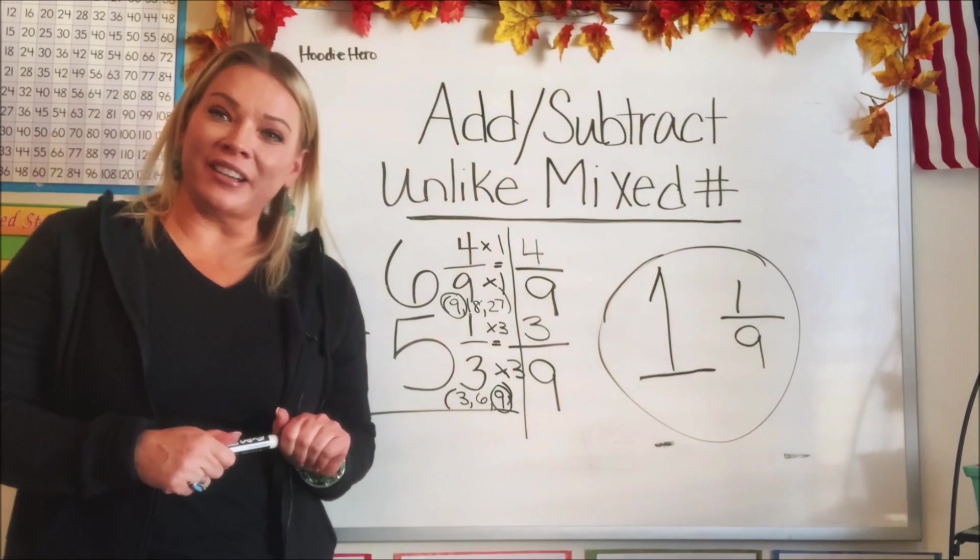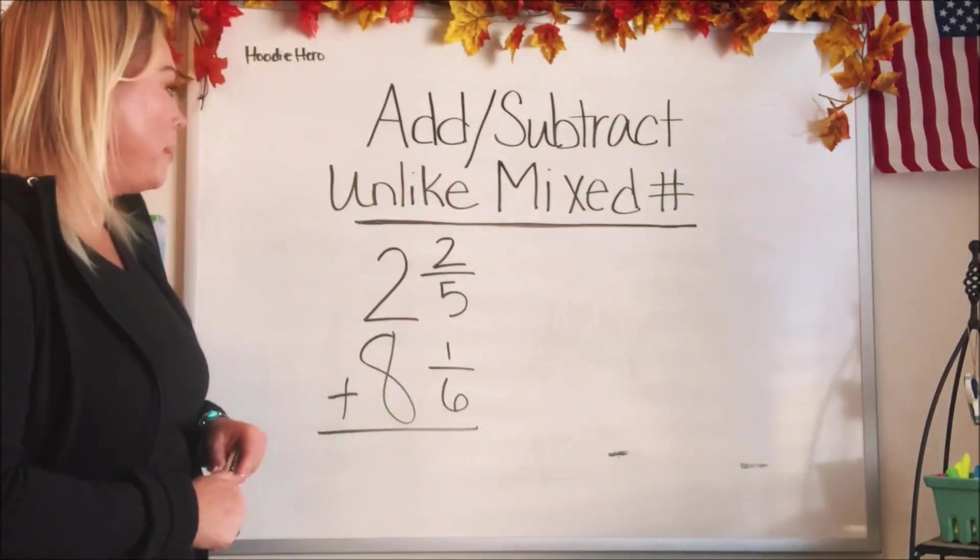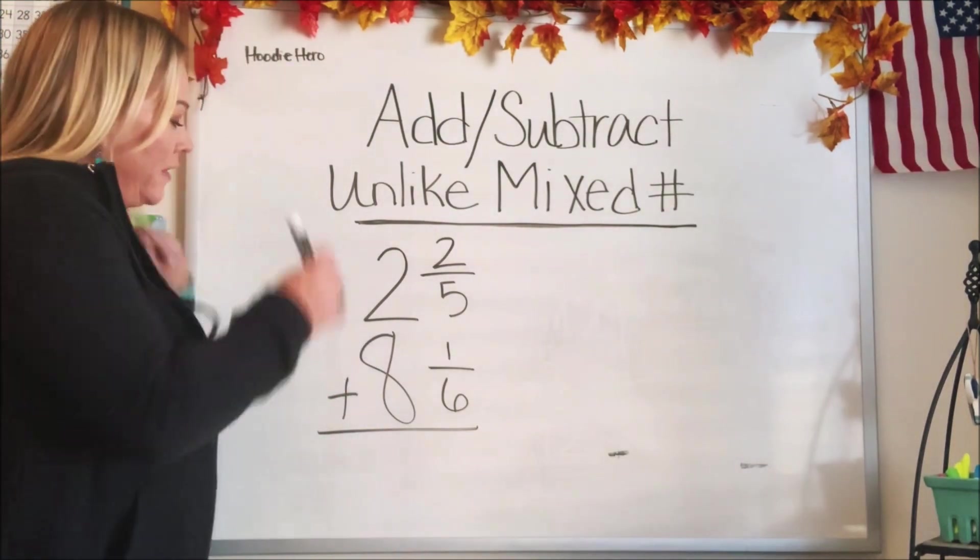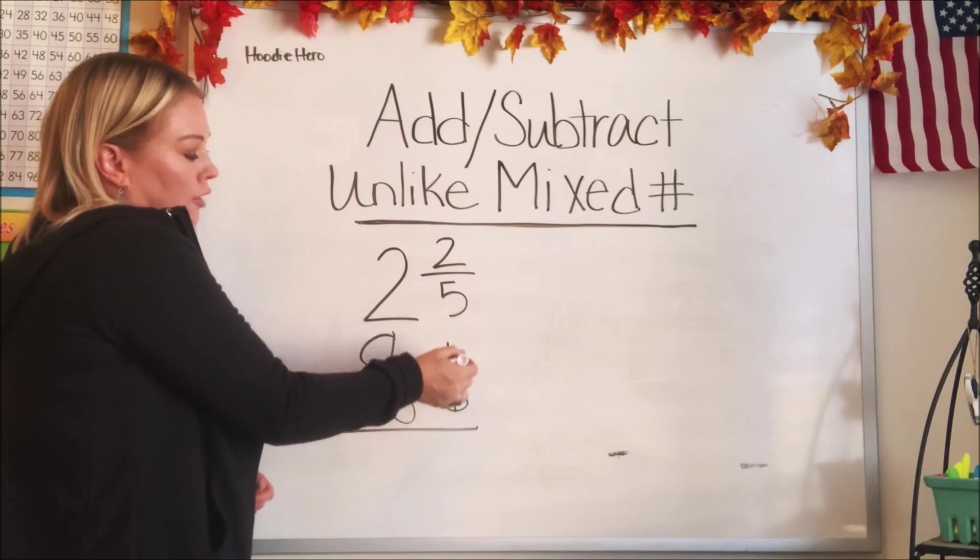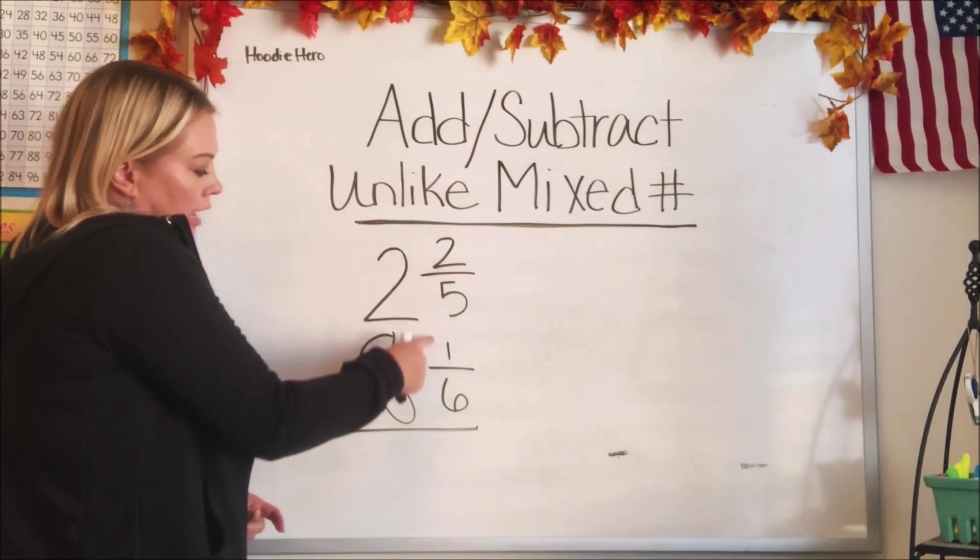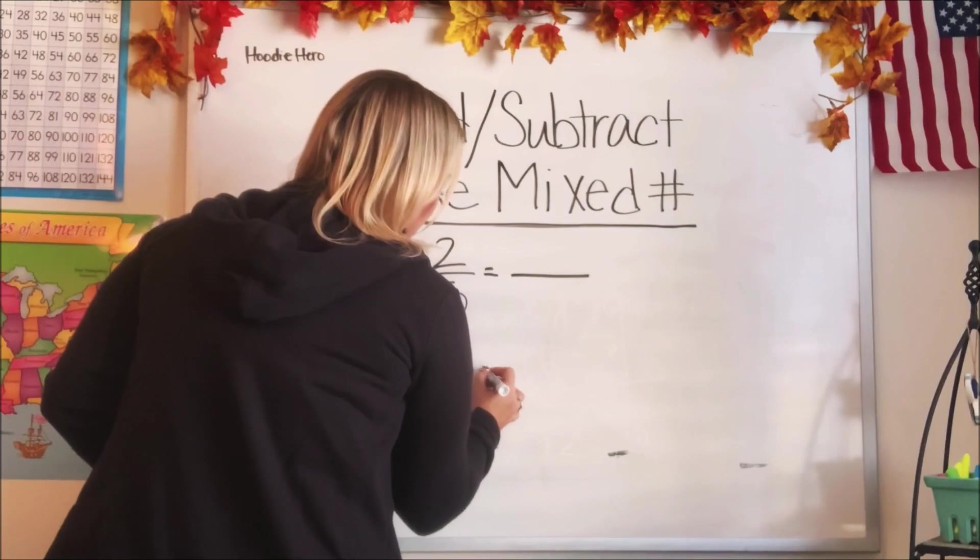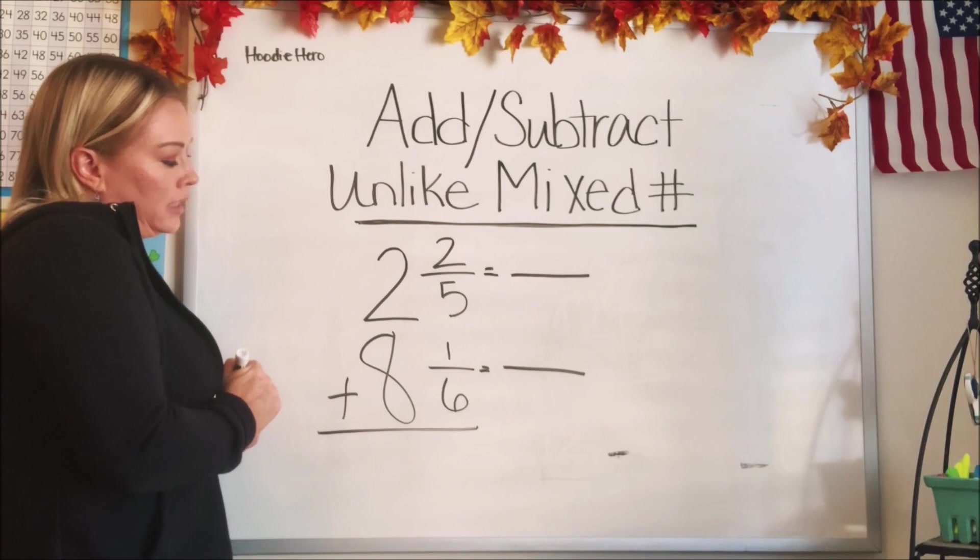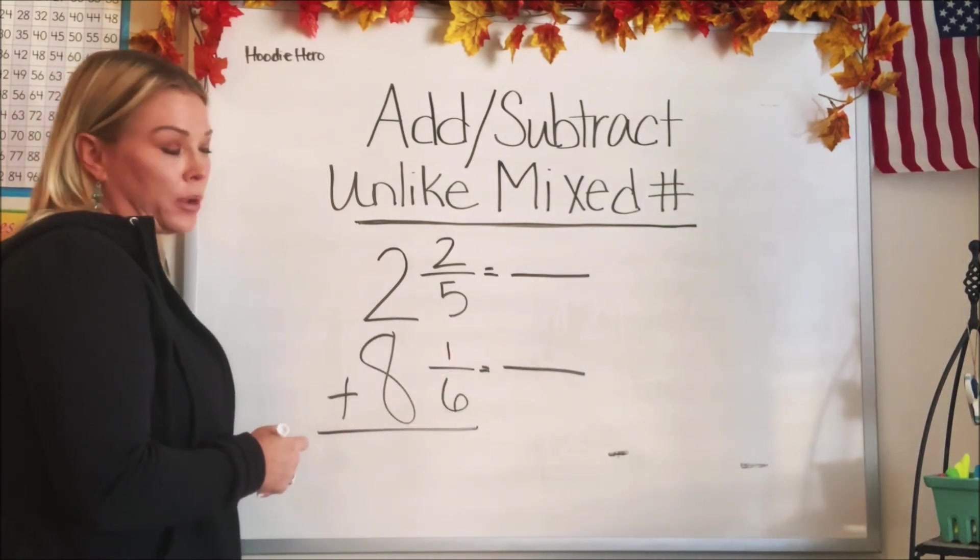Let's go ahead and do one more. Here is our last mixed numbers that we are going to add. Let's figure this out. So we're going to leave our whole numbers alone. Those are just fine. Our fractions of 2/5 and 1/6 are not like. So we can't just simply add down and say 3/11. Can't do that. So let's go ahead and set it up so we don't get lost along the way.